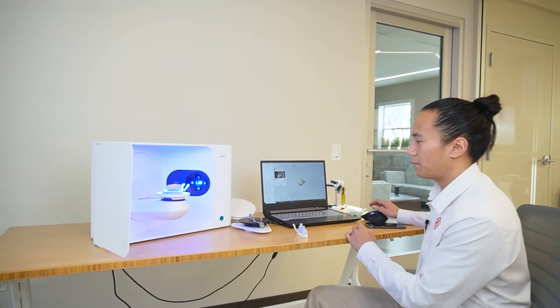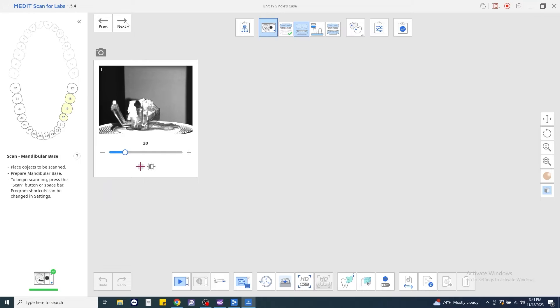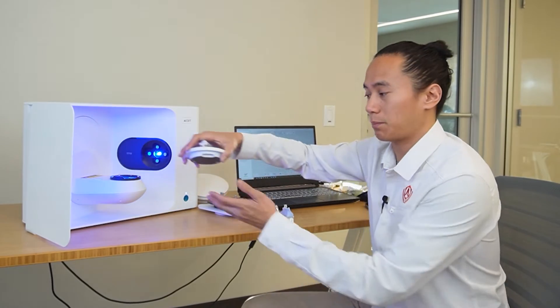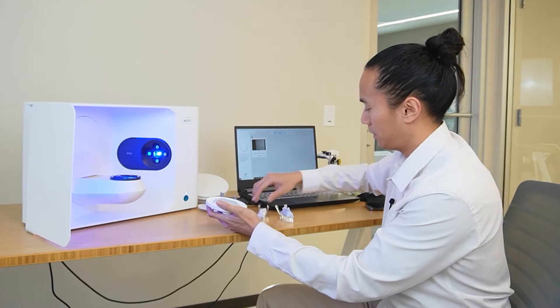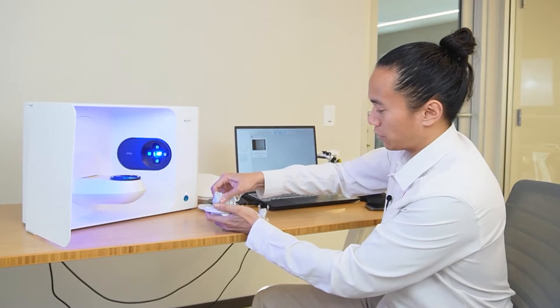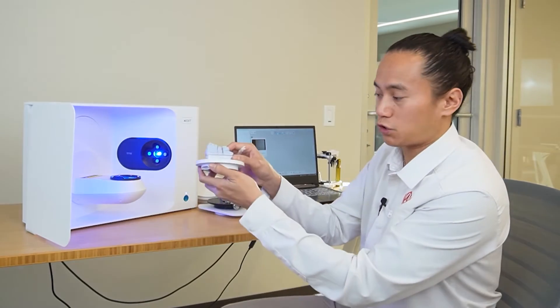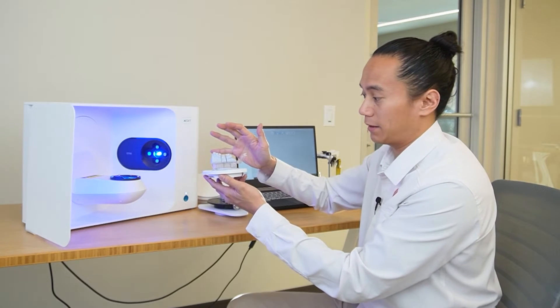All right, this looks good. We'll go ahead and we'll click Next. Again, take your plate off of the scanning arm. Take the model off. Then we'll go ahead and we'll place our base model here. For this specific strategy, I'm leaving all the dies in place for the base scan.